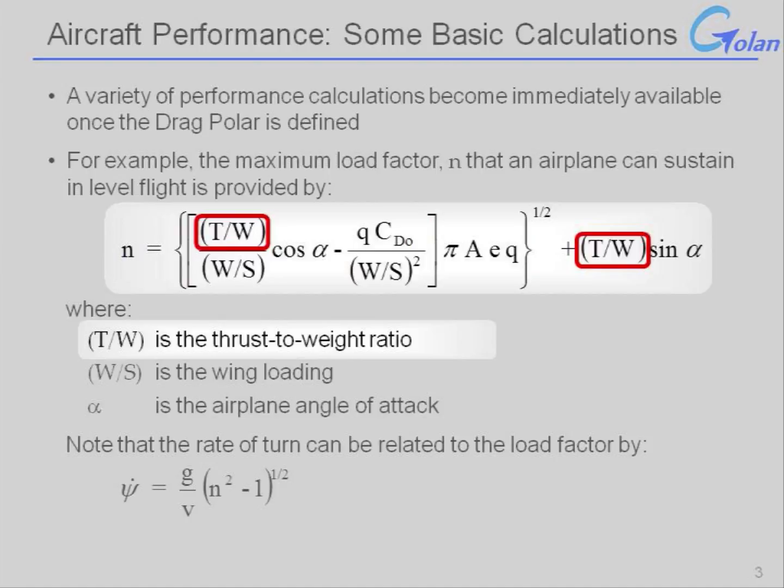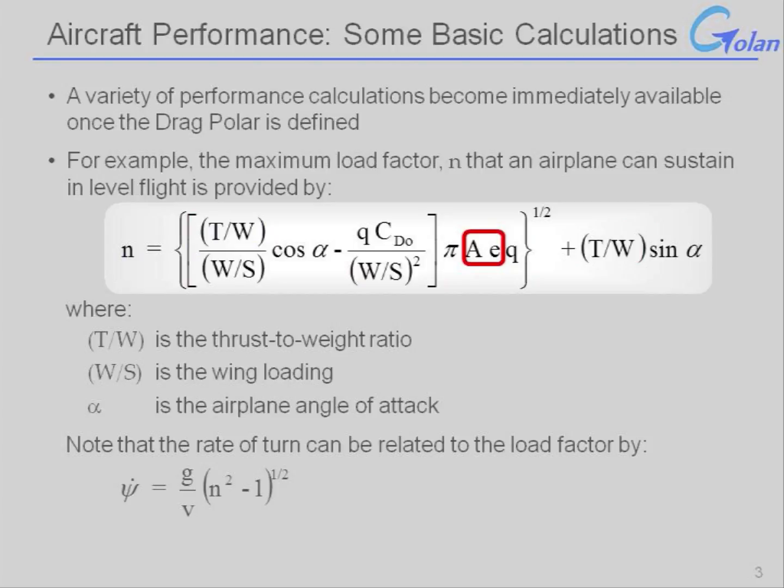We can also see a direct relationship to the aspect ratio of the aircraft and the Oswald's efficiency, or the aerodynamic efficiency of the aircraft. Aerodynamic efficiency plays a very strong role. There's also a dependency on the airplane angle of attack.